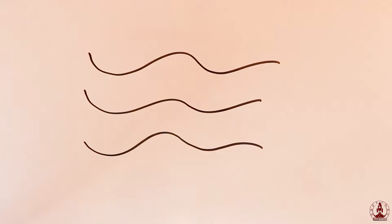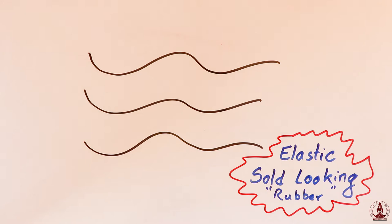What if you want to make your material more elastic or solid-looking? Then cross-linking the linear chain is a good option.